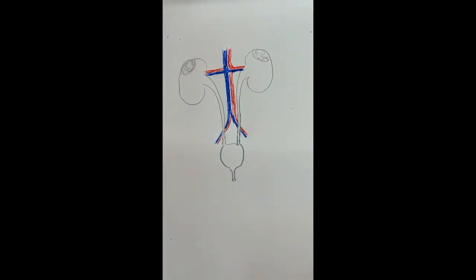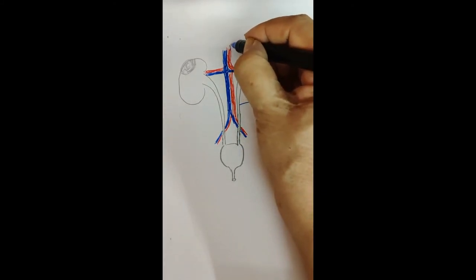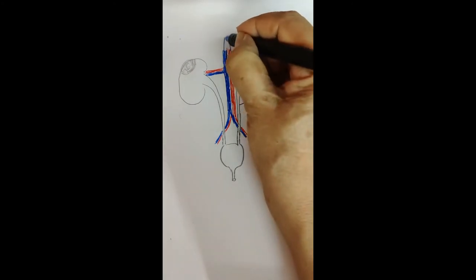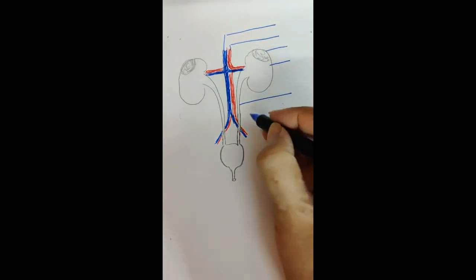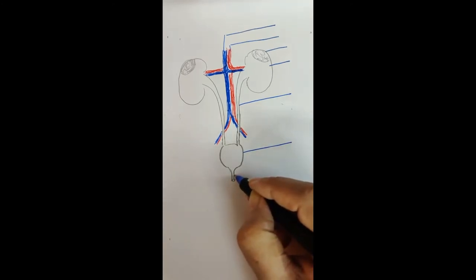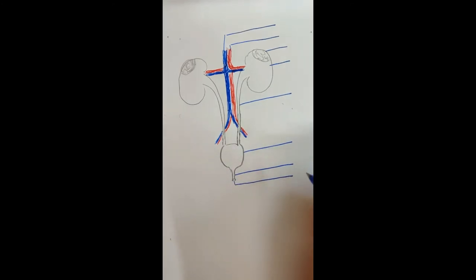Now the labeling. This is the adrenal gland, this is the right kidney, left kidney, this is the ureter, this is the dorsal aorta, the inferior vena cava, urinary bladder, the urethra, and this is the urethral meatus which is guarded by urethral sphincter.